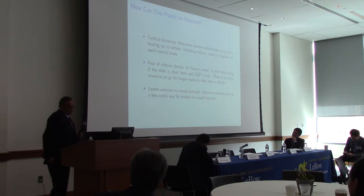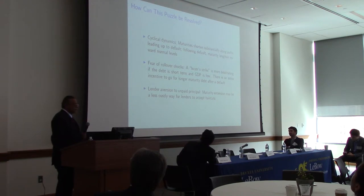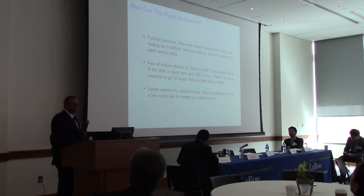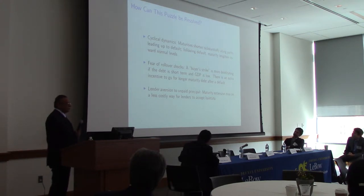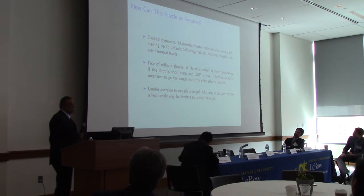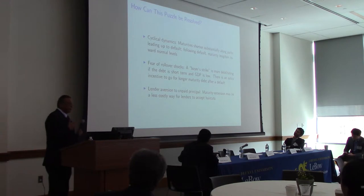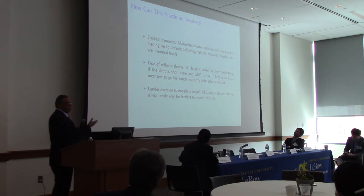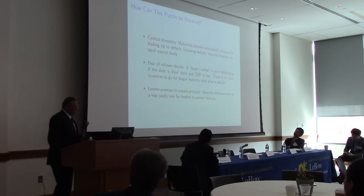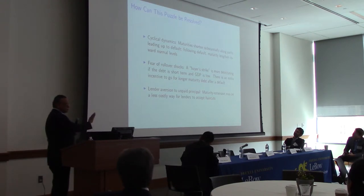How can this puzzle be resolved? To the credit of the authors, they thought about things that actually matter. The first is the cyclical dynamics: maturity shortens before default because it becomes very expensive to borrow long-term as creditors get worried. Then, after default, as the country recovers and fears of default fade, the natural tendency in these models is for maturity to extend — that's an automatic feature.